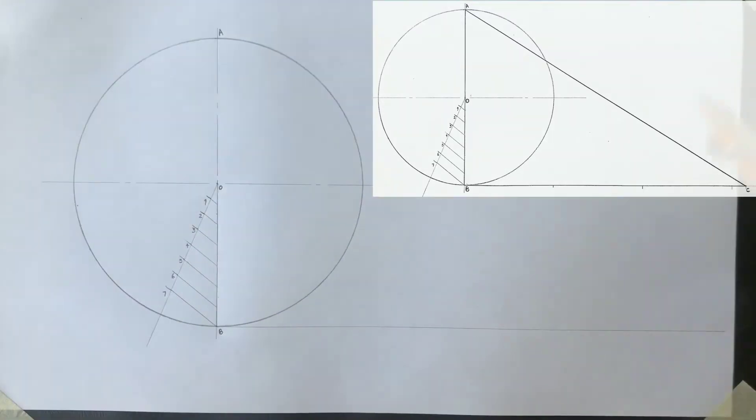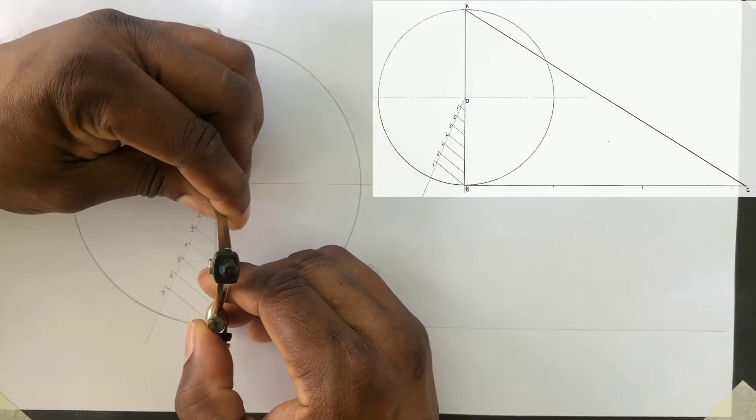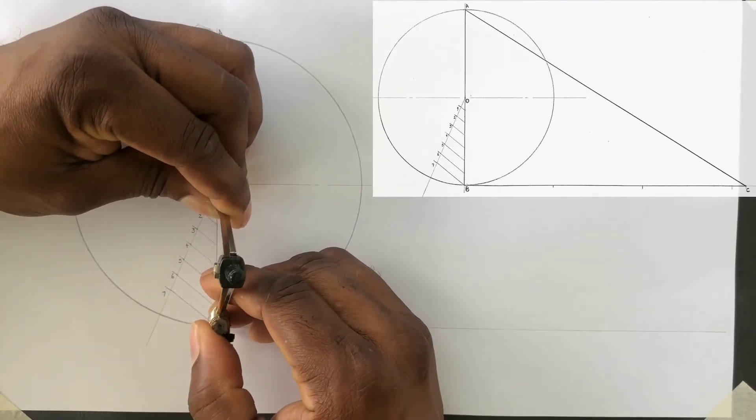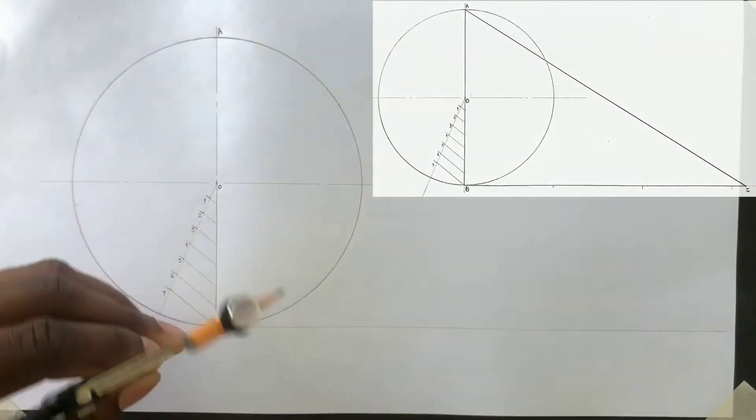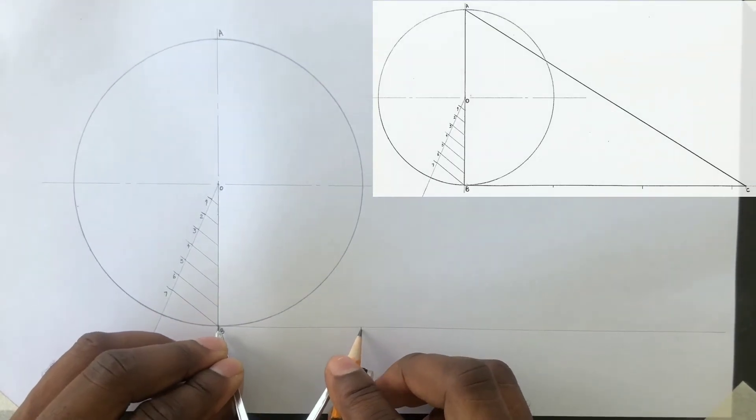You will now open your compass to the radius of the circle OB. And on the tangent you drew from point B, you will now step off three divisions on this line using the radius.